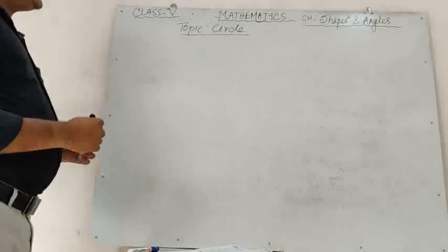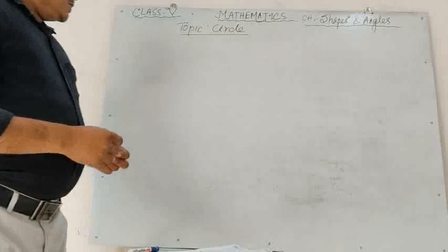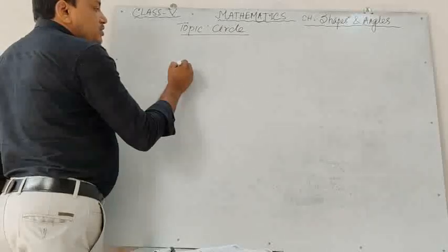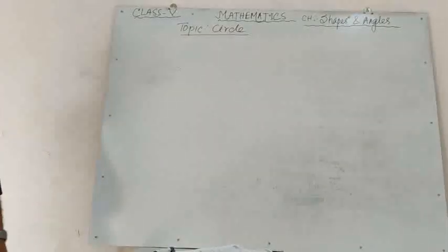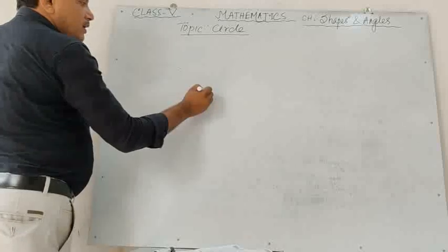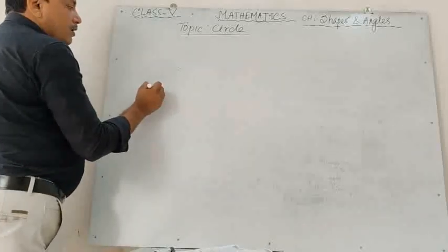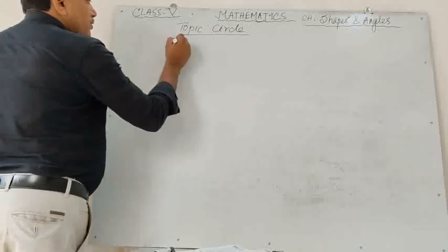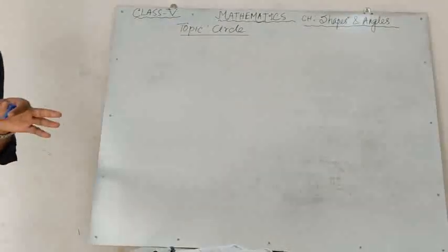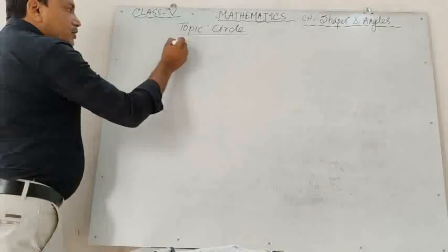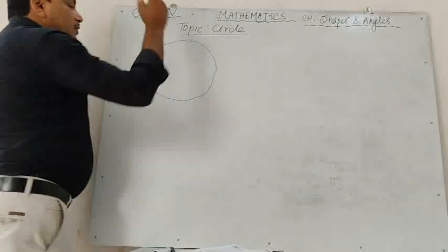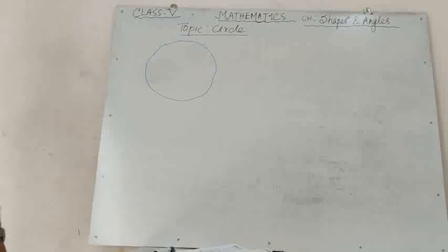First of all, what is a circle? Suppose I am taking a fixed point on the plane surface, and we will take some points which are equidistant from the fixed point. Now if I join these points with a curved line, then I will get a circle.